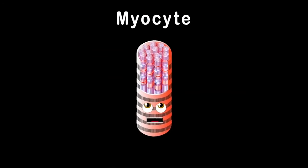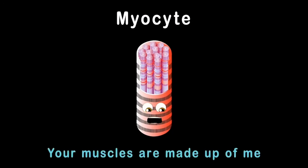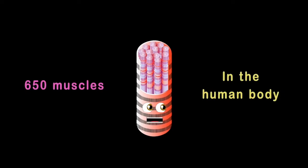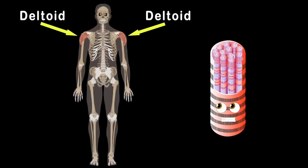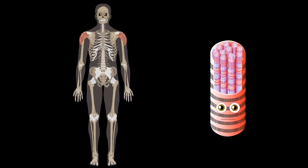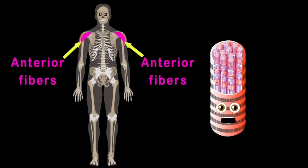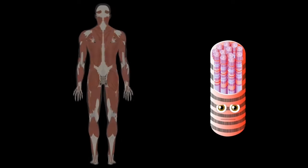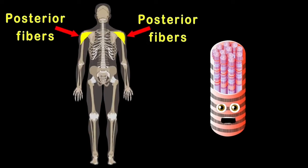I am a myocyte. Your muscles are made up of me. Here's some of the 650 muscles in the human body. We'll start with the deltoids that sit on the shoulders of your arms. There are three parts to your deltoid. The anterior fibers are on the front side of you, while the lateral fibers sit on the top of the shoulders. The third part's called posterior that sits on your back. All three make up your deltoid muscles.